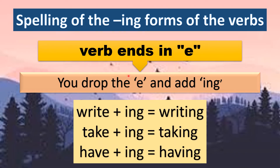You have to bear in mind the spelling of the -ing forms of the verbs. You cannot simply put the -ing. For example, if the verb ends in E, you have to drop the E and add -ing. For example, write — you drop the E, then you put -ing, so it becomes writing. Another example, have — you drop the E, you put the -ing, and it becomes having.